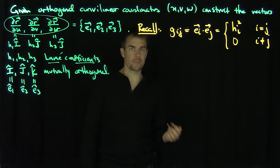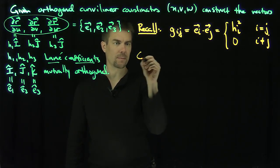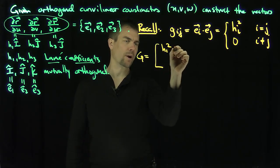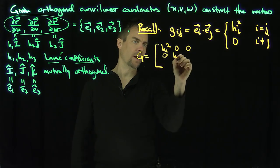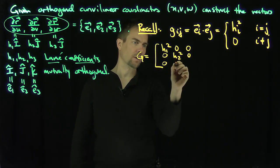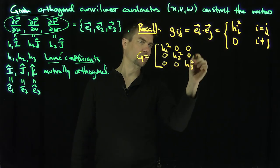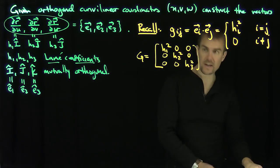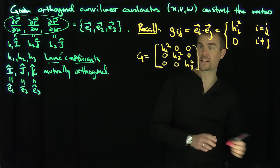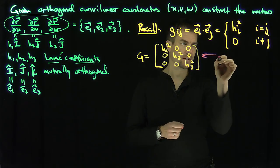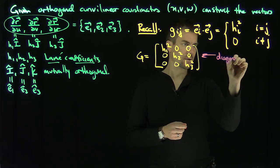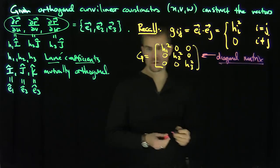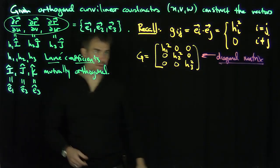This tells us that the Gram matrix g is going to be a diagonal matrix: h1 squared, zero, zero; zero, h2 squared, zero; zero, zero, h3 squared. The important feature of orthogonal curvilinear coordinates is that this Gram matrix is already diagonal, which makes all of our calculations much easier.